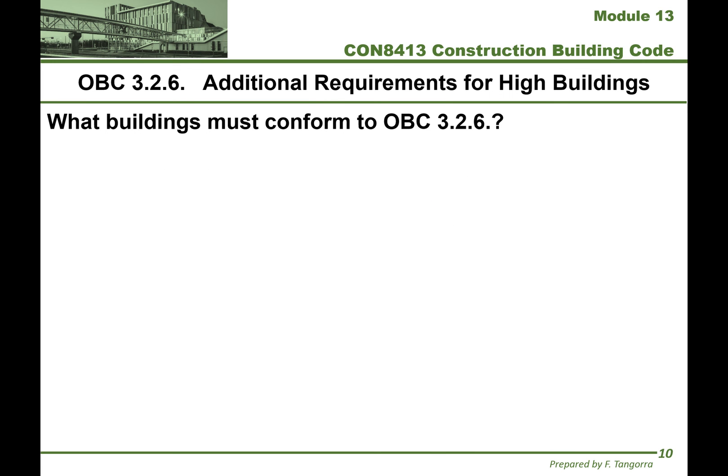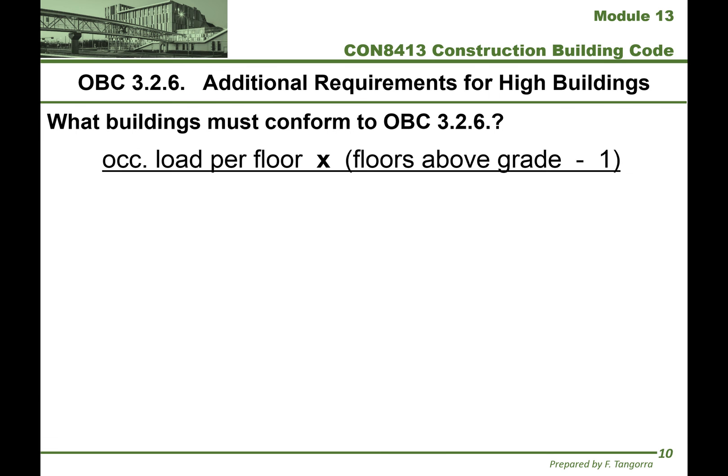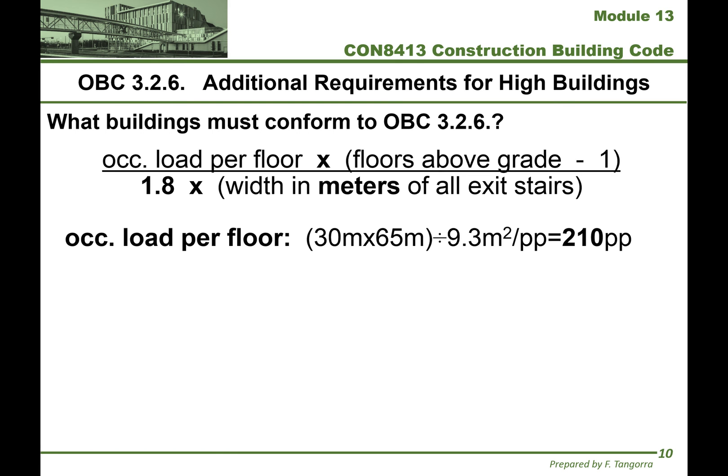This is what the formula basically says. It's a fraction where the numerator is the occupant load per floor times the number of floors above grade minus one. All of this gets divided by 1.8 times the width in meters of all exit stairs — not just one, but all of them. The occupant load per floor is the area of the floor plan — 30 meters by 65 meters — divided by the factor from a specific table in the building code. For office, that factor is 9.3 square meters per person.